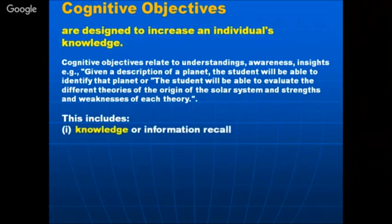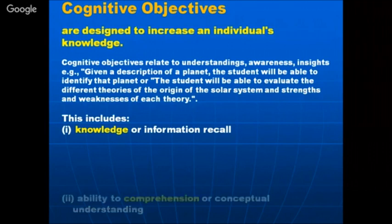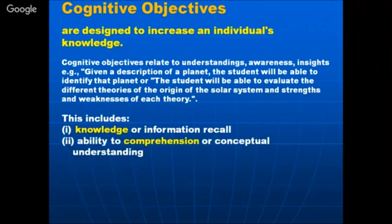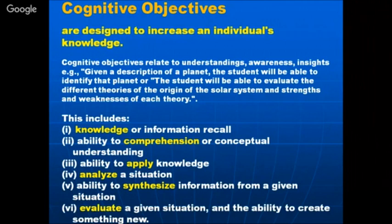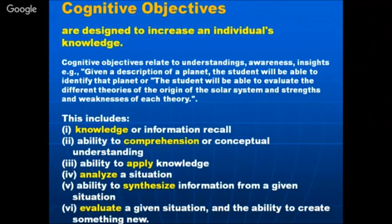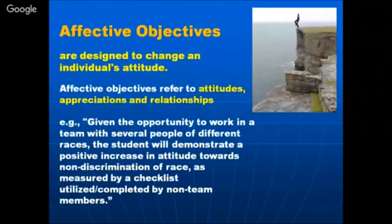Cognitive objectives include knowledge at a very elementary level — information recall, ability to comprehend or conceptual understanding, ability to apply knowledge, ability to analyze a situation, ability to synthesize information, and ability to evaluate a given situation, and finally the ability to create something new. So right from recall to creating something new — these are the levels of cognitive domain objectives.